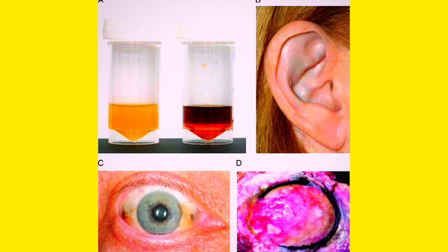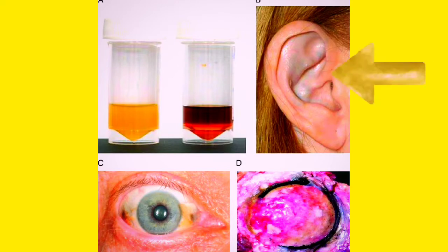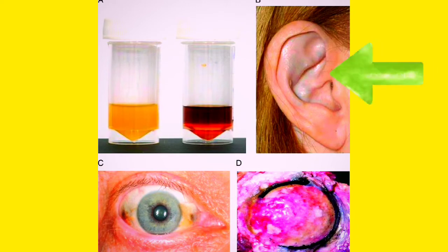Hi everyone, I am Shahan Laik. Today in this video I will give you a picture — can you diagnose what disease it is? You can see picture A where a urine sample has turned black. Now look at the second picture, which is of the ear — you can see blackish coloration inside the ear.